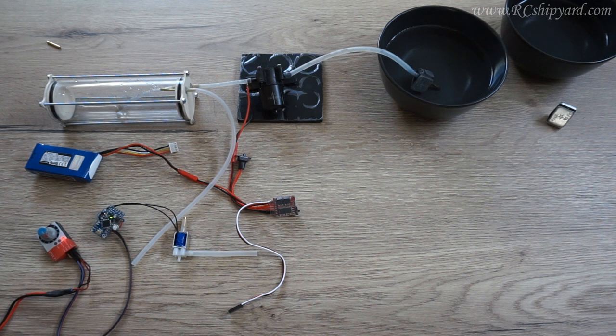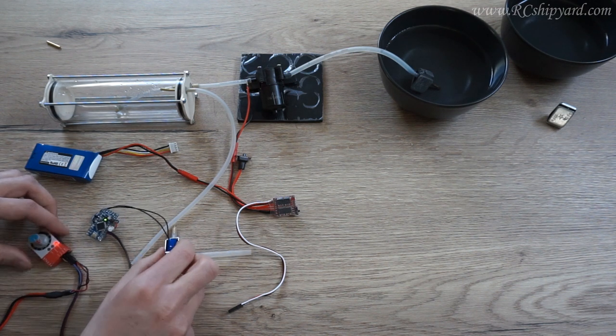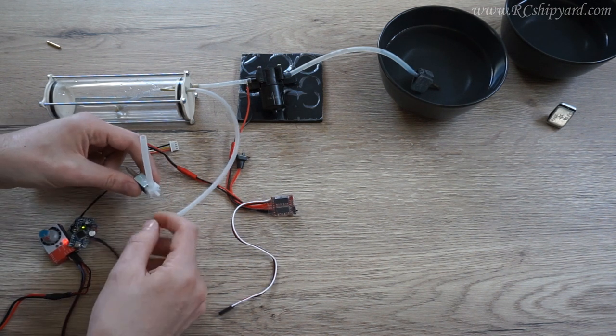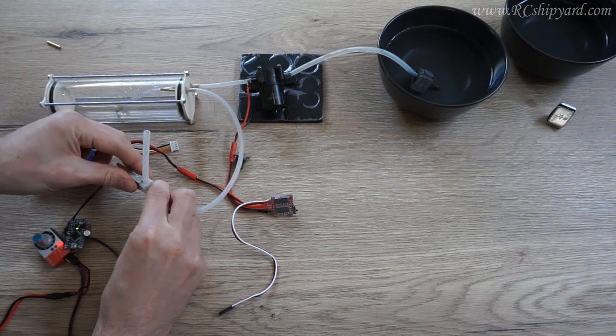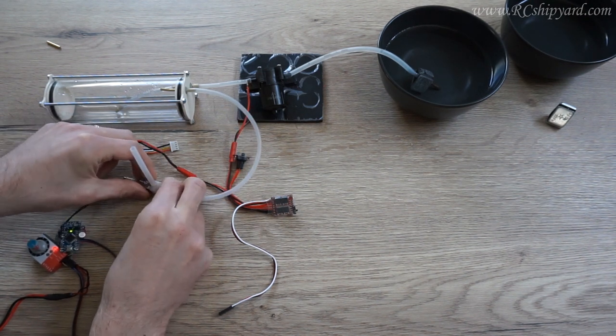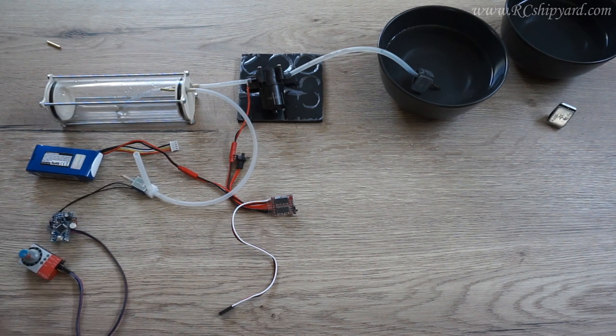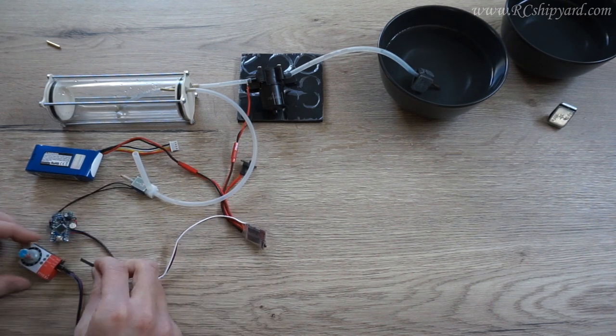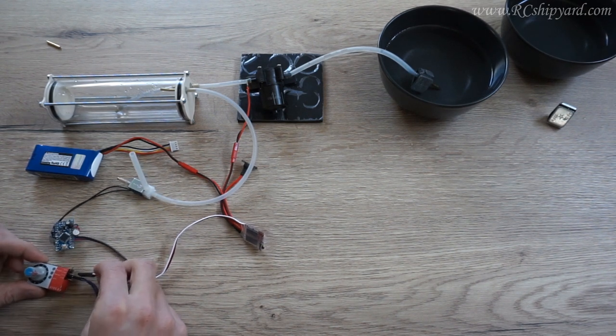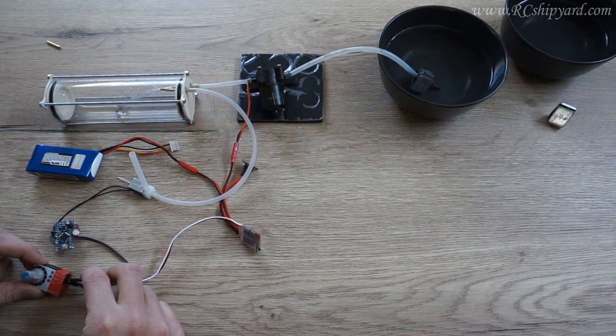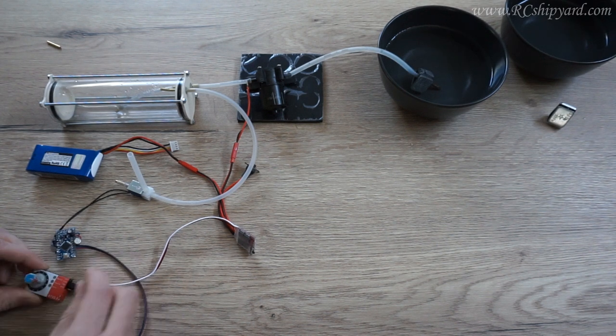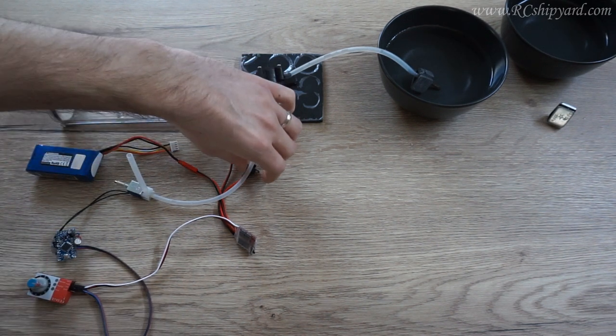So let's connect it. We connect the solenoid to our snorkel tube. We can disconnect the battery pack as we will be using the built-in battery eliminating circuit.